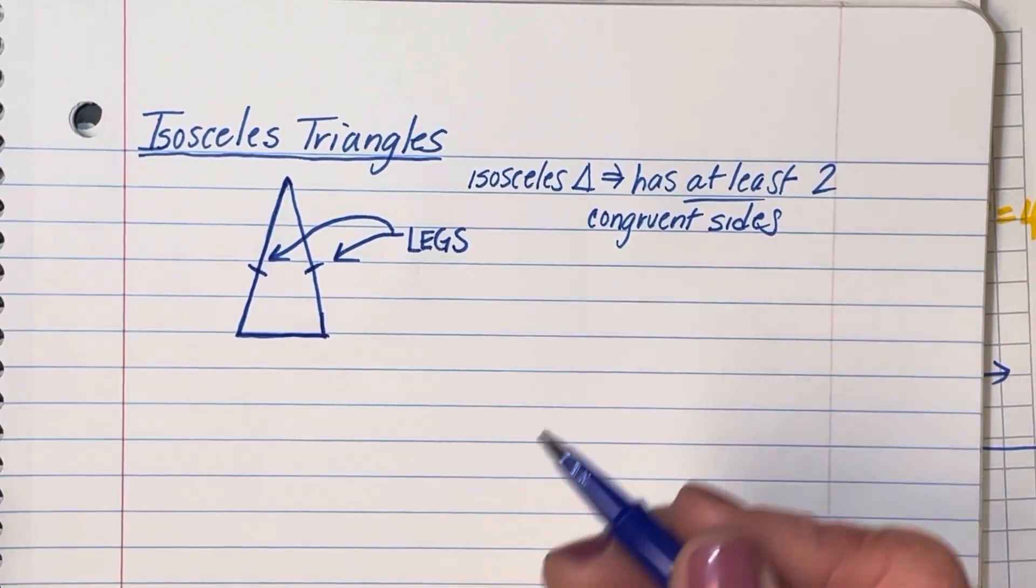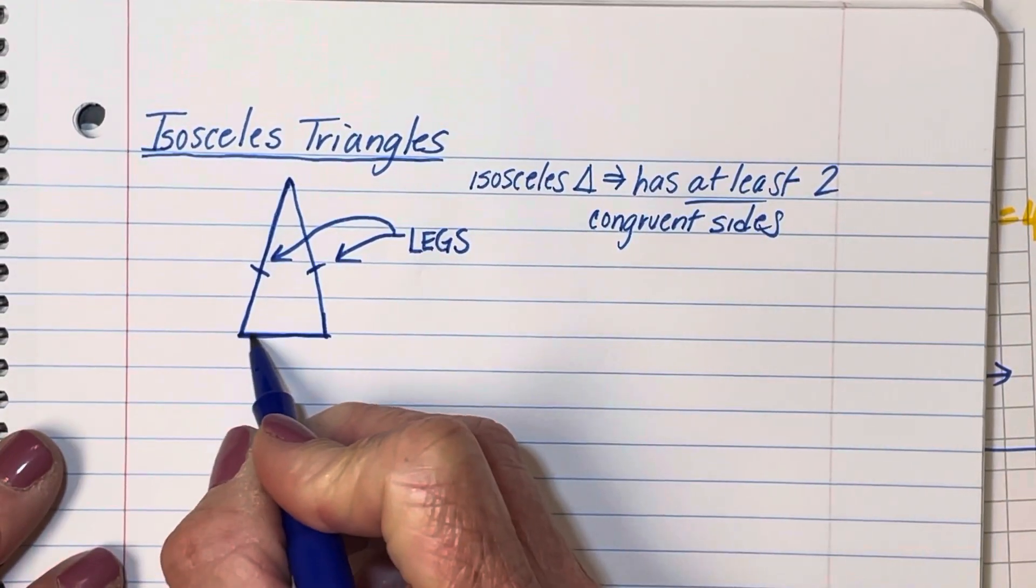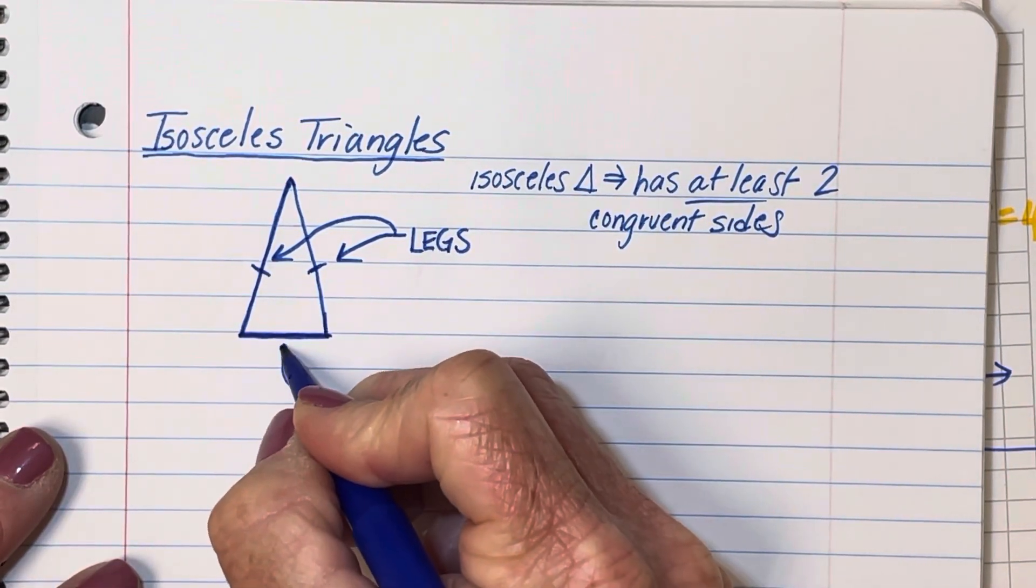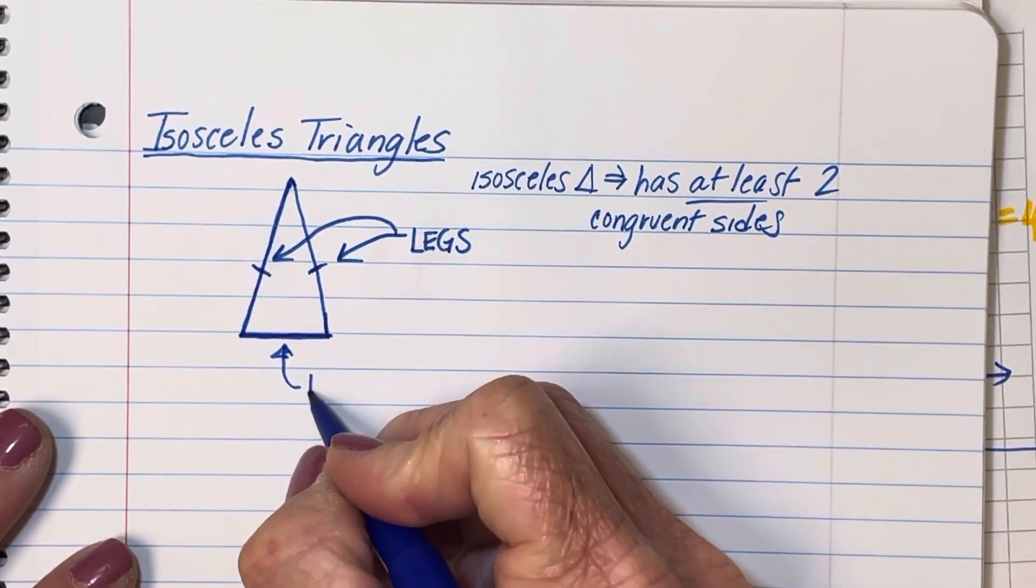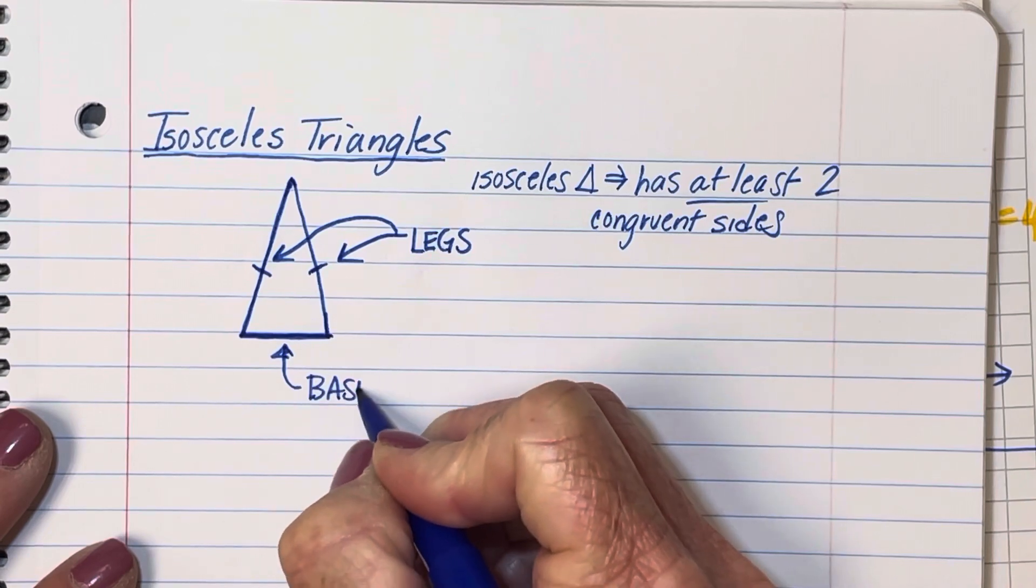An isosceles triangle does not have a hypotenuse. The third side that's not congruent to those, or just the third side, this is called the base of the triangle.